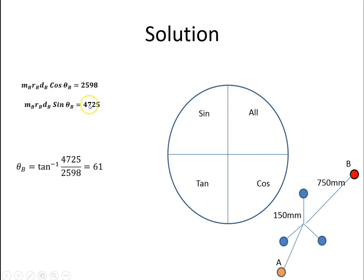Sine and cosine, they're both positive, so if I have a circle, the only quadrant where both are positive is in here. So I'll draw my angle here. The horizontal component was 2598. The vertical component was 4725. To get the angle here, I just get the arc tan of that, and that works out to be 61 degrees.